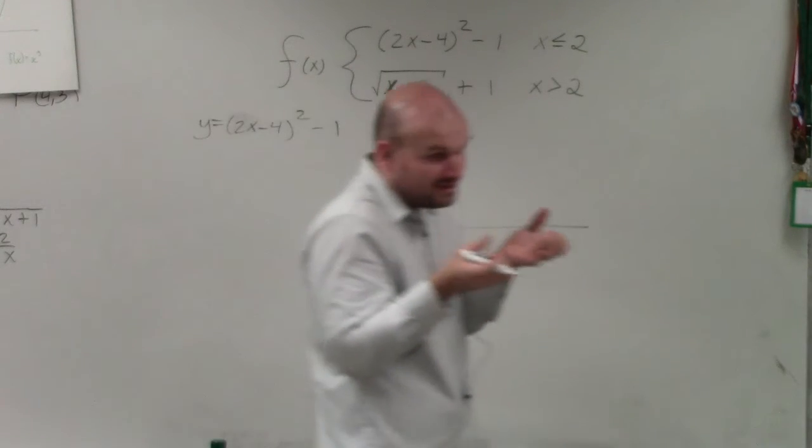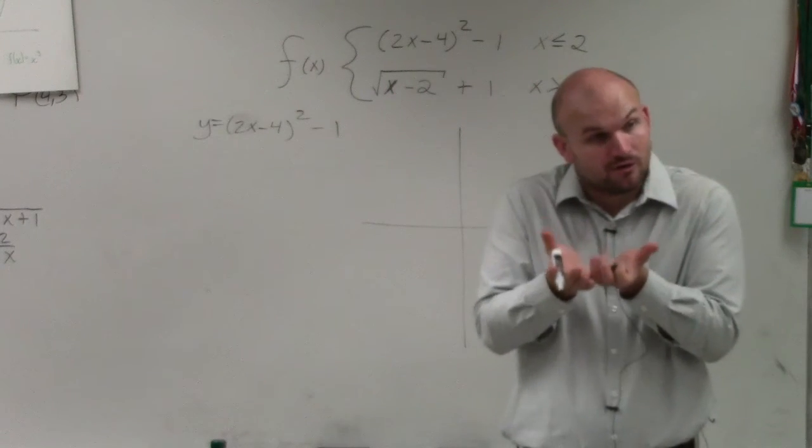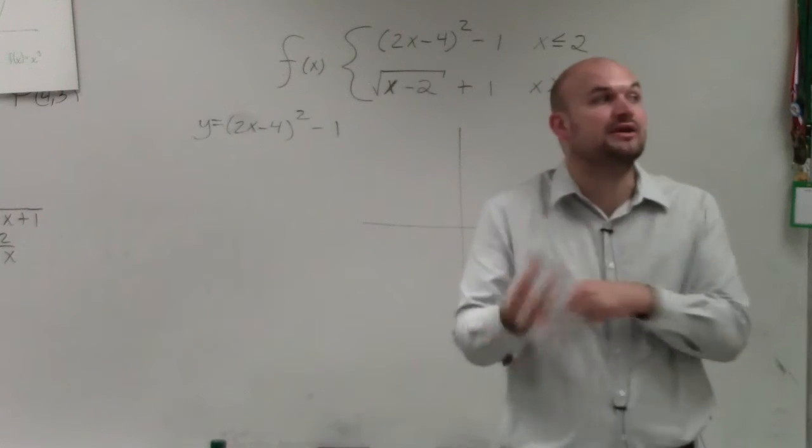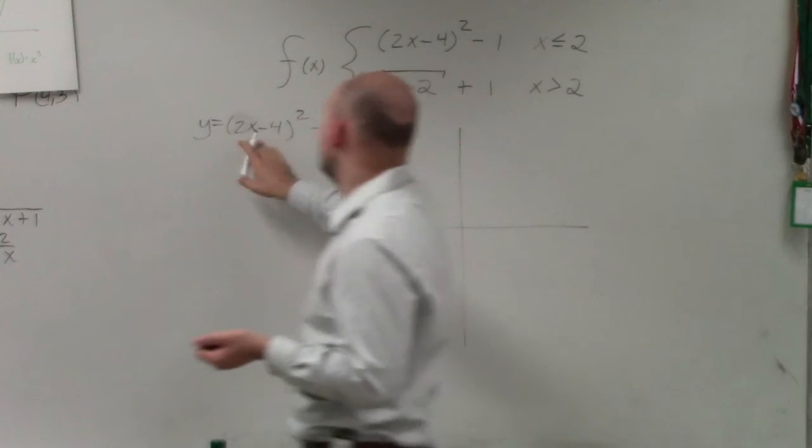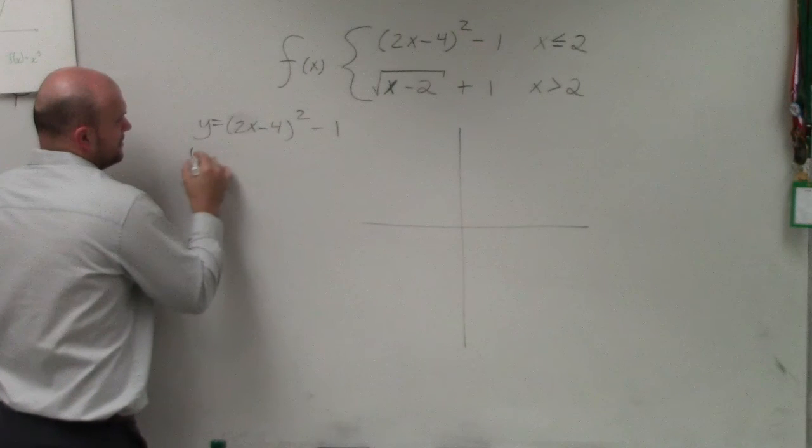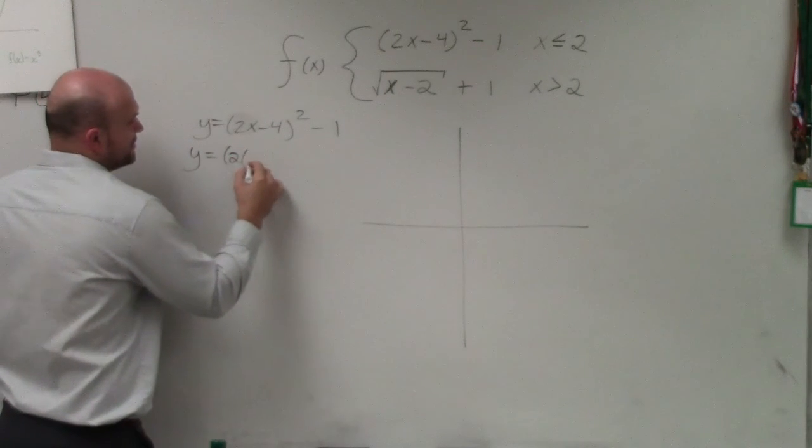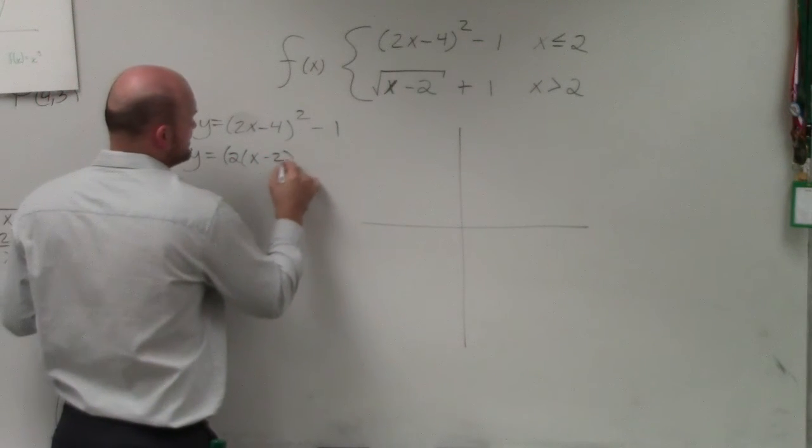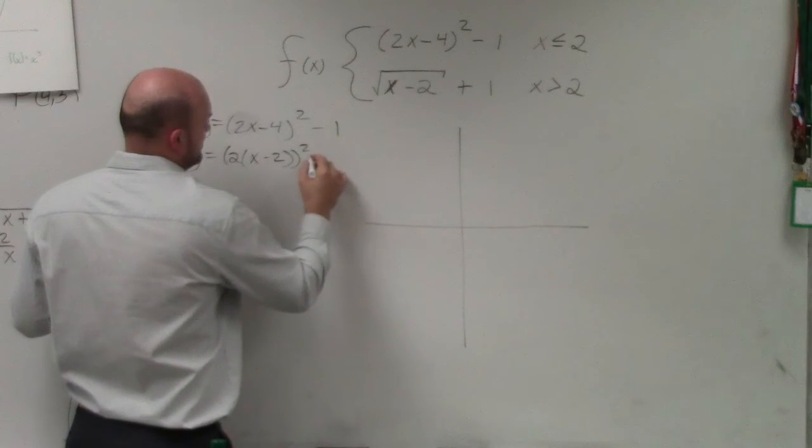you've got to make sure that that is being multiplied by both of them. So I need to factor out a 2, which leaves me with an x minus 2 squared minus 1.